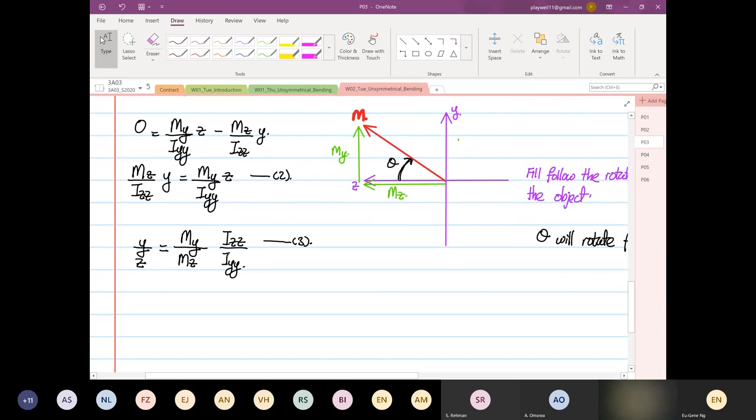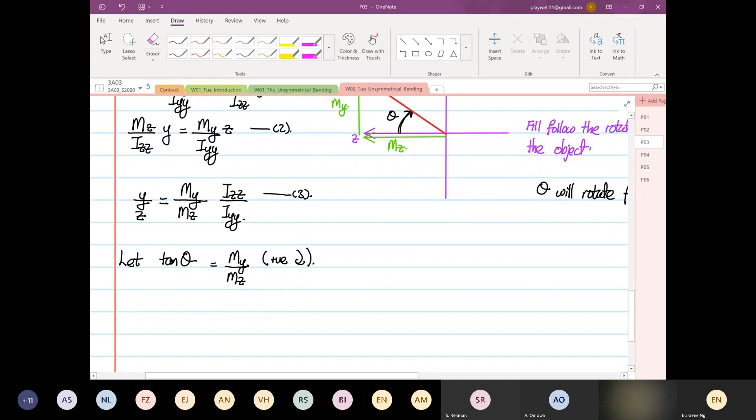So we're going to let tangent theta, right, like what we have over here, we're going to let tangent theta is equal to My over Mz. And again, I'll elaborate down here, positive is going in a clockwise direction. So we know this relationship from the figure. So we're going to substitute tangent theta.